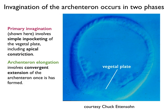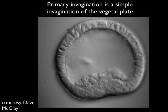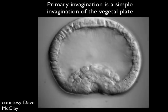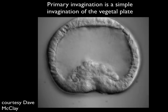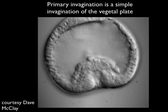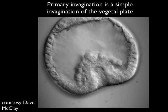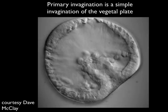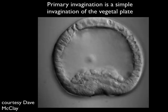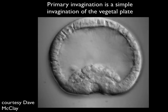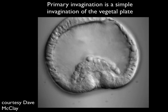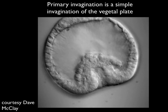Let's look at a movie of primary invagination, again in Lytechinus variegatus, an Atlantic coast species — this is from Dave McClay's lab at Duke University. As we run this forward, you can see that the vegetal plate begins to invaginate. You can see a dimpling and the blastopore forming at the base of the archenteron. The archenteron invaginates about a third to one-half of the way across the blastocele — that's what we mean by primary invagination. The embryo is wiggling because there are cilia swimming; it's been stuck down with molecular glue to stay largely in place. You can see some cells at the tip of the archenteron — these are actually secondary mesenchyme cells beginning to become visible.